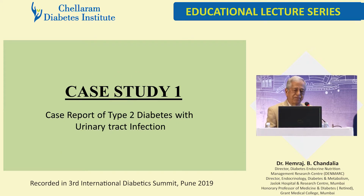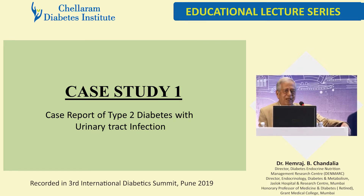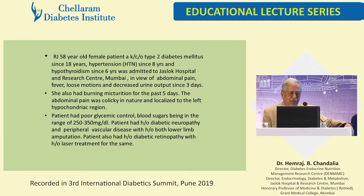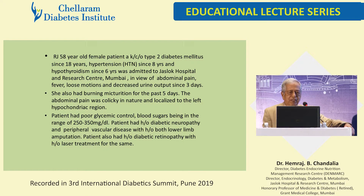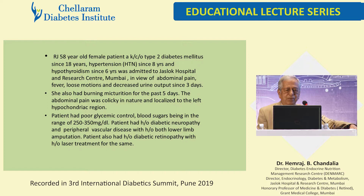Case one. This is a patient with type 2 diabetes and urinary tract infection — a somewhat rare situation we encountered, which some of us diagnose on the phone when the resident calls. This is a 58-year-old female, a known case of type 2 diabetes for 18 years, hypertension for 8 years, hypothyroidism for 6 years, admitted with abdominal pain, fever, loose motions, and decreased urine output for the past 3 days. She also had burning micturition for the past 5 days. Abdominal pain was colicky in nature, localized to the left hypochondriac region.